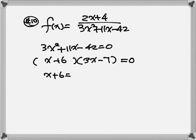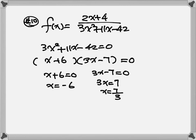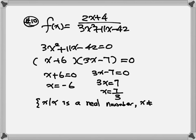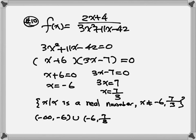We're going to set each factor equal to zero and solve for x. So x equals negative 6, and 3x equals 7, giving x equals 7 over 3. So x is a real number but x cannot equal negative 6 or 7 over 3. The interval notation will be negative infinity to negative 6, union negative 6 to 7 over 3, union 7 over 3 to positive infinity.